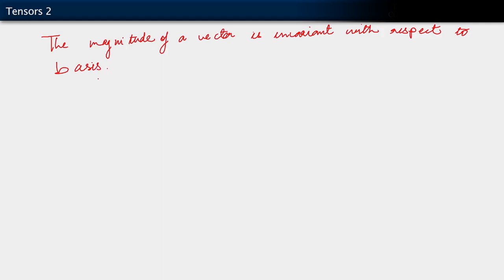What this means is that we all know what we mean by the magnitude of a vector. So if we write that as the magnitude of u, we know that this can be written as the square root of u_i u_i. This is indeed an invariant, and to see how this happens, we note that this is also equal to u dot u.